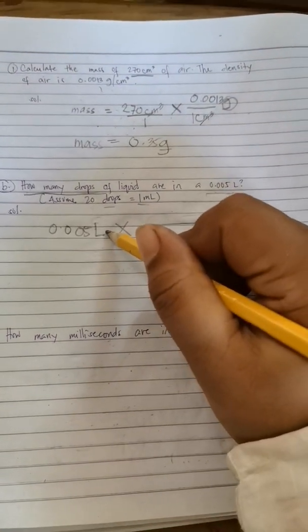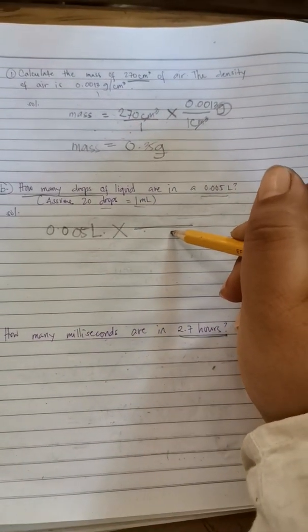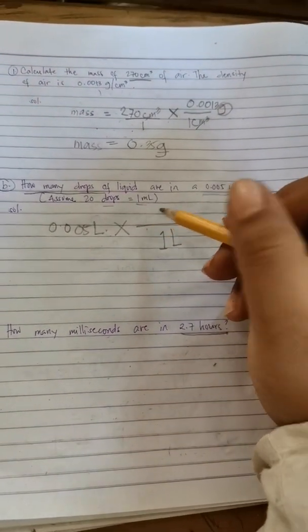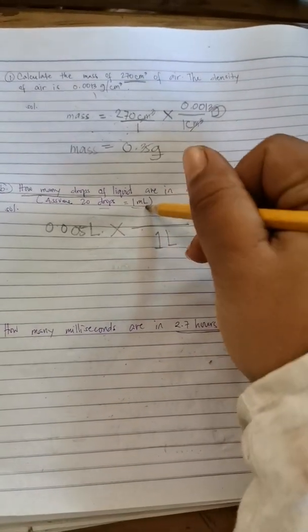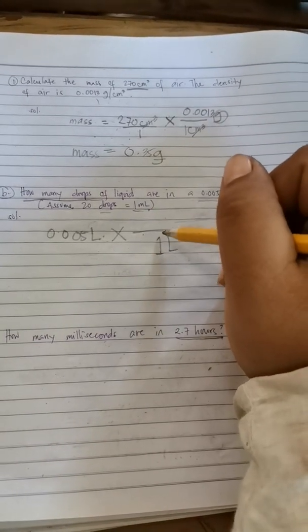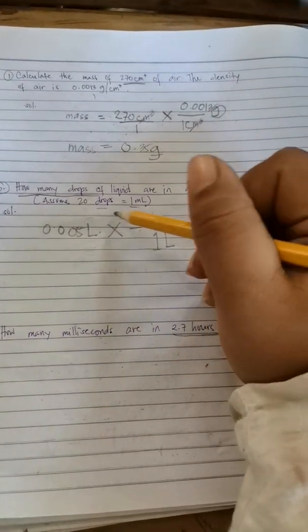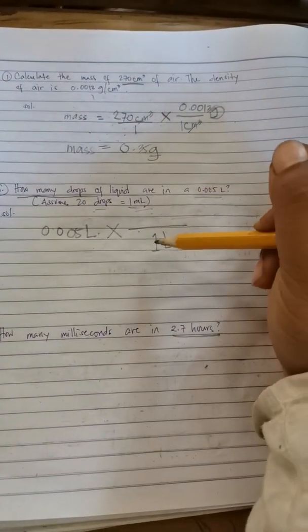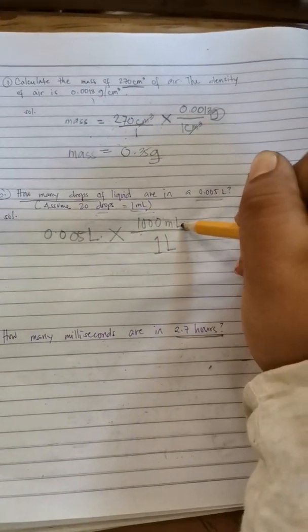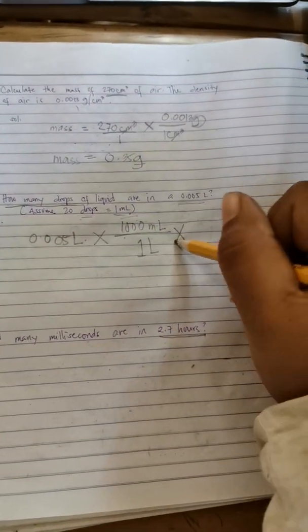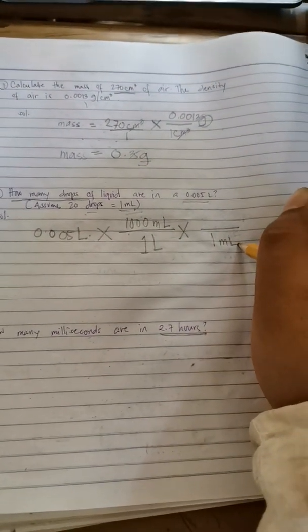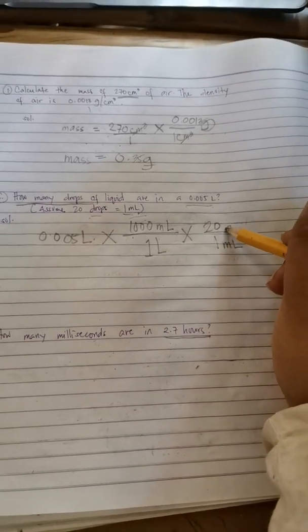To eliminate liters, we have to put liter here in the denominator. So in 1 liter, there are how many milliliters? We cannot directly put drops in the numerator, milliliters first. So in 1 liter, there are 1,000 milliliters times another. In 1 milliliter, there are how many drops? 20 drops.